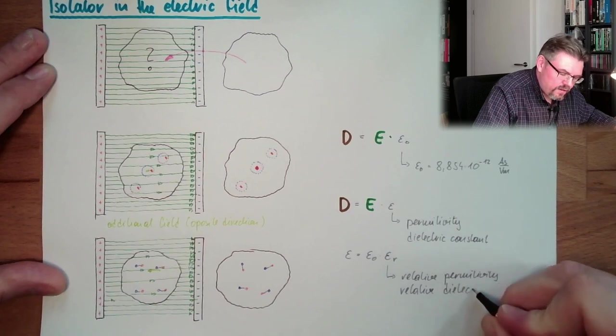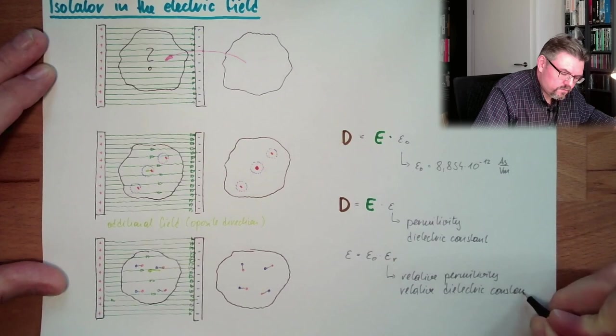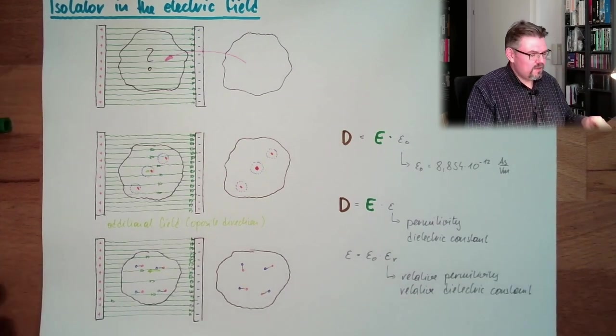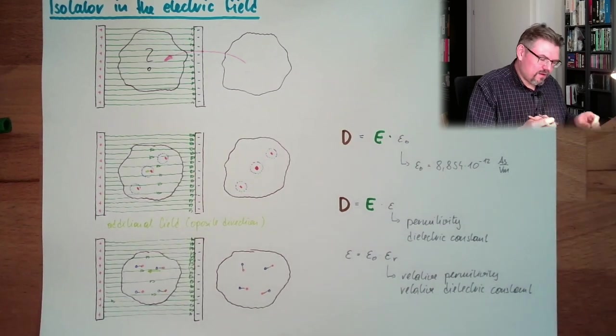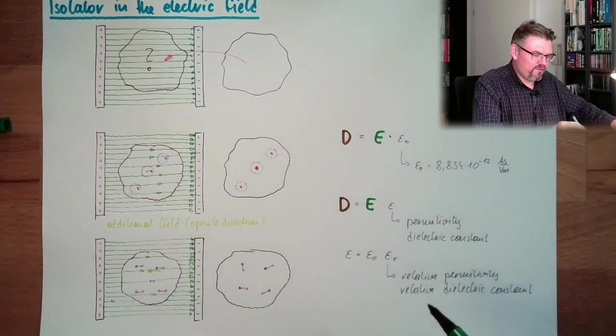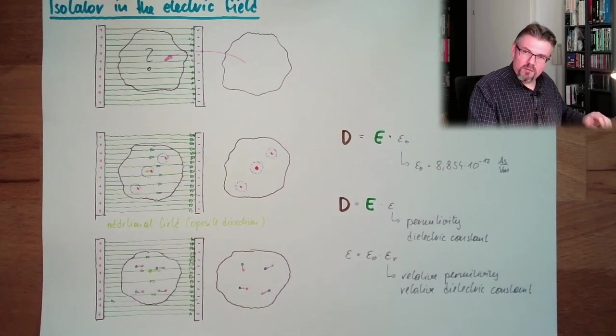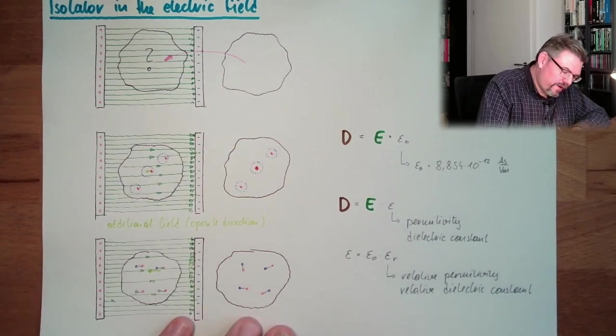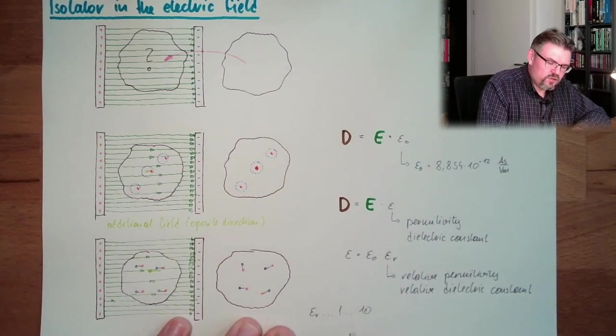This is how you can somehow get the effect of the isolator in our formula. What are usual values? Epsilon r, usual values are 1, 2, 10. These are usual values.